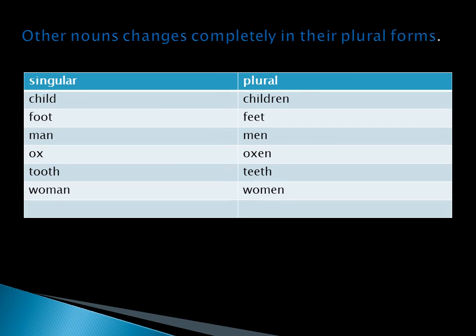Other nouns change completely in their plural form. These are nouns like: child becomes children, foot becomes feet, man becomes men, ox becomes oxen, tooth becomes teeth, woman becomes women.